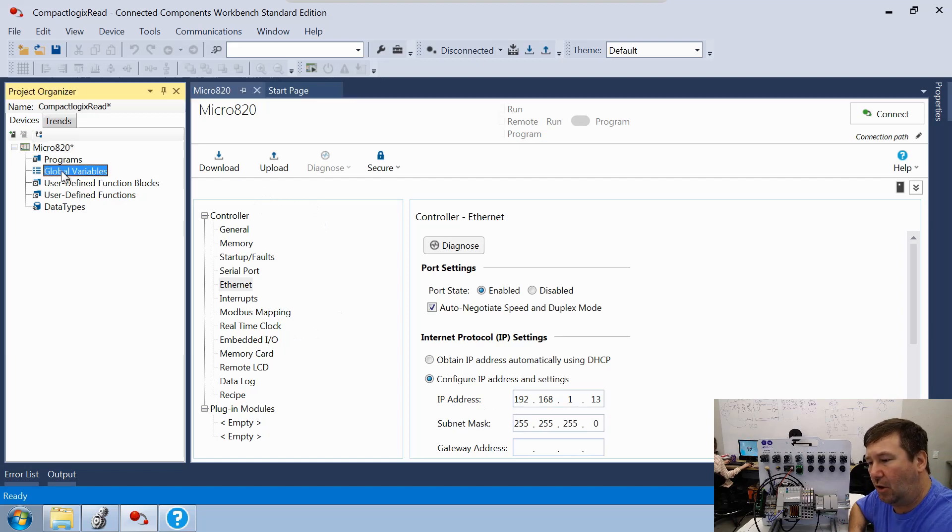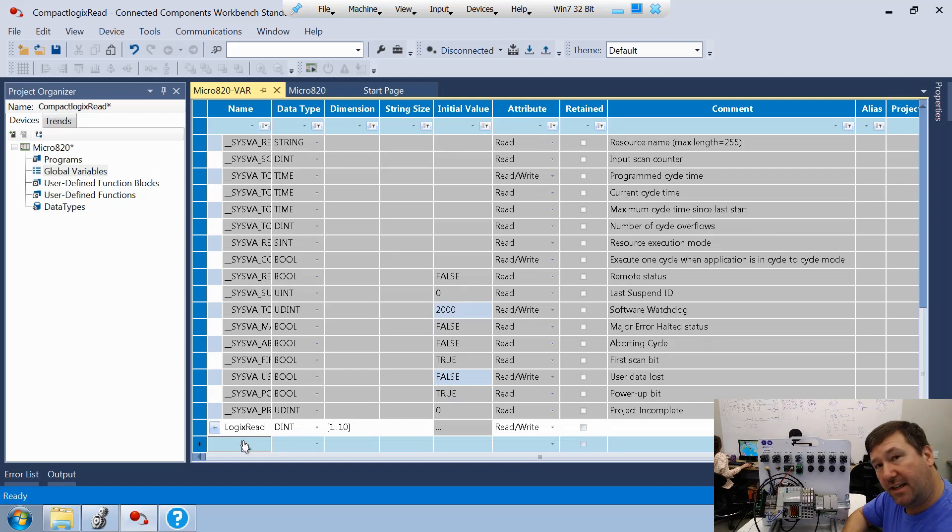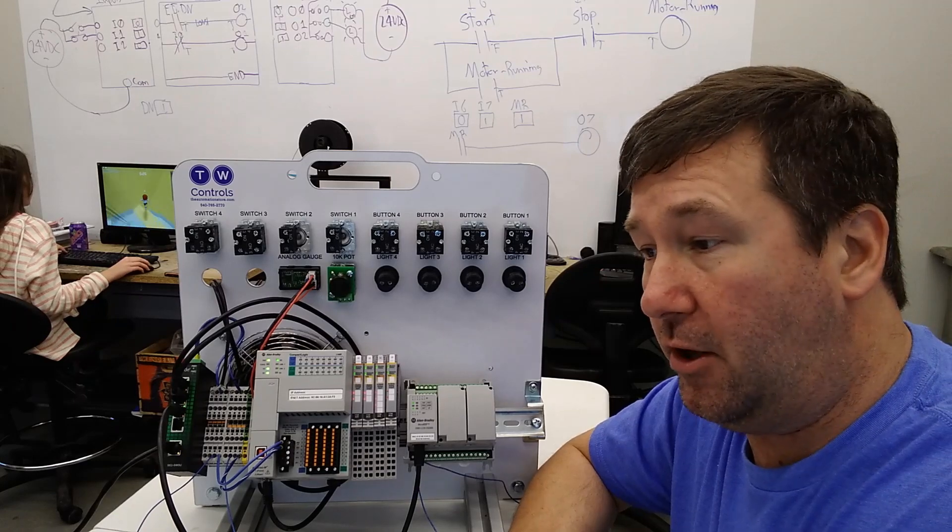Then let's go to our global variables. We're going to create a tag called Logix Read. It will be a DINT type or a double integer. And for the dimensions, put 1, 10. That's going to make an array of 10 underneath this Logix Read tag. And that's it for our program.